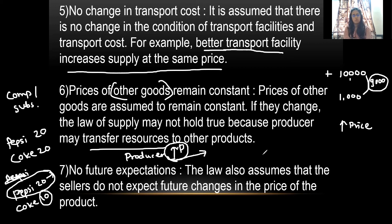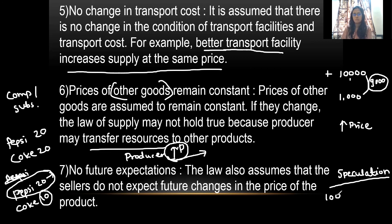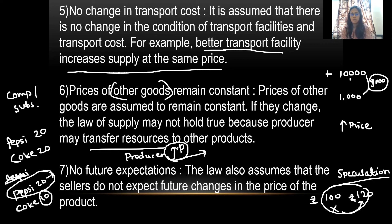The seventh assumption is no future expectation. Just as in demand analysis consumers should not speculate about the future, suppliers also should not. Speculation means expecting future prices. If a supplier is selling at 100 rupees today but expects the price to rise to 120 rupees tomorrow, they may withhold supply and not sell at the current price. This should not happen — there should be no future expectations. With this, we have finished all seven assumptions.